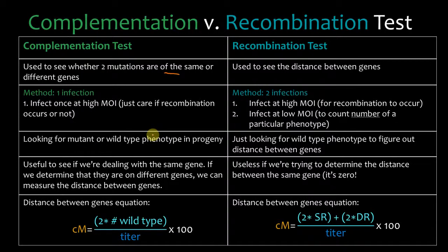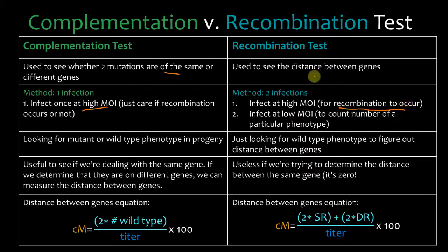How do you do the methods? On a complementation test, you only do one infection at a high MOI, because all you care about is whether complementation occurs or not. With the recombination test, you do two infections: the first at high MOI to make sure recombination occurred, and then a second at low MOI to see what kind of recombination occurred. Then you count the number of a particular phenotype to see whether recombination actually occurred.